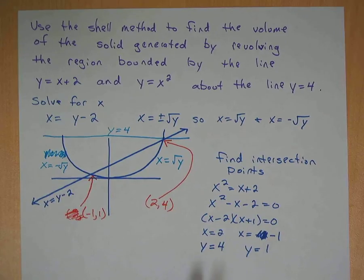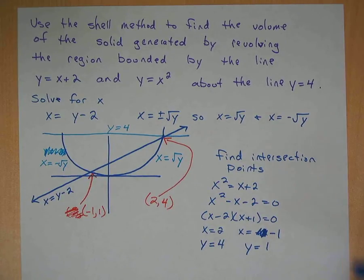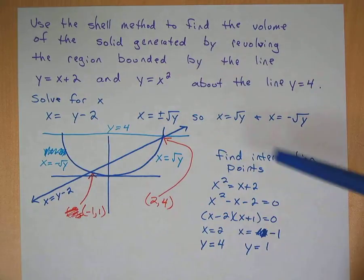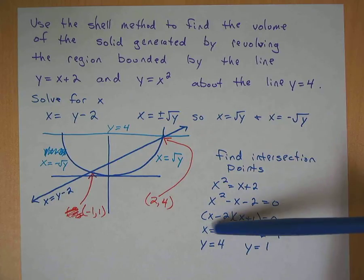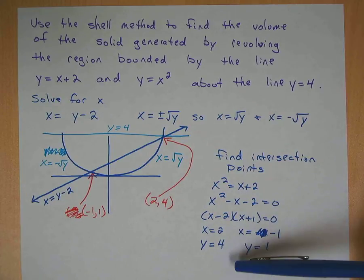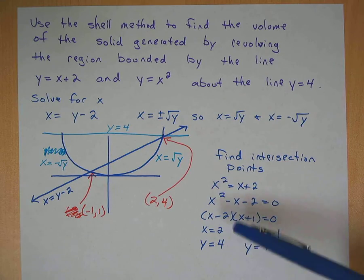So the next thing you want to do is find your intersection points. It's easier to solve using the x equation, so I set them equal to one another, x squared equals x plus 2. Solve this down here by factoring x equals 2 and x equals negative 1.